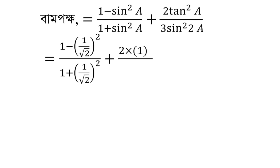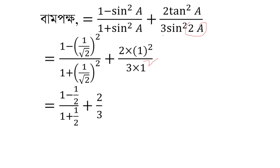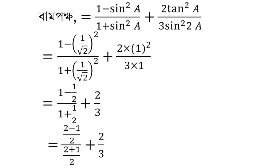Plus, 2 sin 2a is 1 by root 2 squared, and 3 into sin 2a is 1 by root 2 squared. 2 plus 1 minus 1 plus 2. That equals 2. 2 plus 1 by 2 plus 2 by 3.